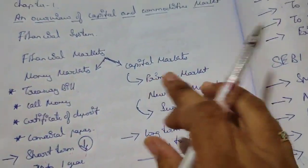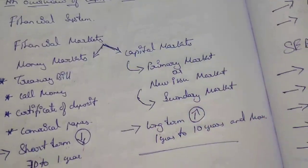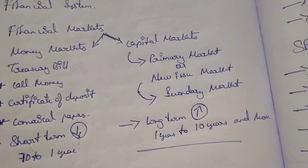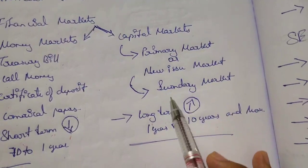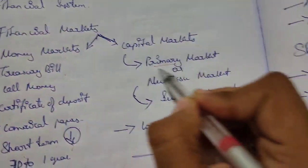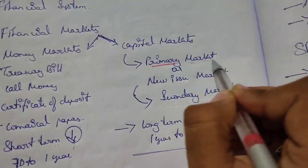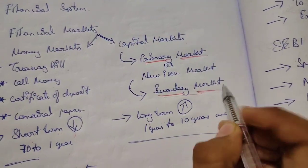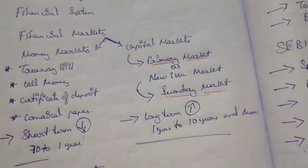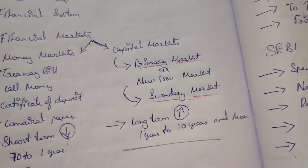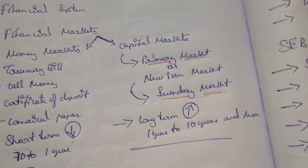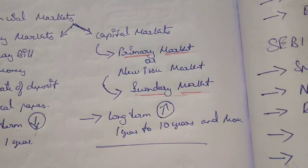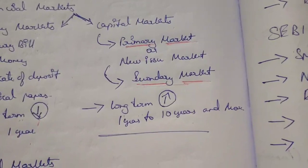Now let's quickly move to capital market. Capital market is divided into two parts: primary market and secondary market. The primary market is the new issue market. If a joint stock company is coming into existence for the first time and wants to raise capital by issuing shares and debentures, it will enter the primary market.